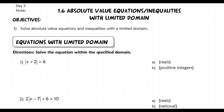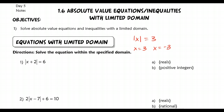We have an absolute value equation. When solving this, we want to get the bars out of there. Recall that for the absolute value of x equaling 3, there are two possibilities: either x equals 3 or x equals negative 3. So there are two solutions. The same goes here — either x plus 2 equals 6, or x plus 2 equals negative 6. We set up and solve both and get two solutions: 4 and negative 8.